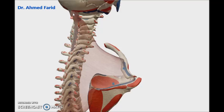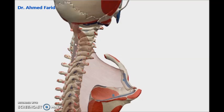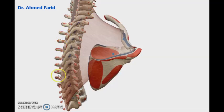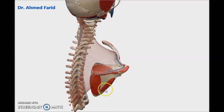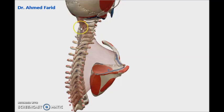The second origin is from the nuchal ligament, which is the ligament attaching the seven cervical vertebrae with each other. The third is the thoracic origin, which is the spines of all thoracic vertebrae. So it has three main origins: occipital origin from the occipital bone, nuchal ligament as the cervical origin, and spines of all thoracic vertebrae as the thoracic origin.